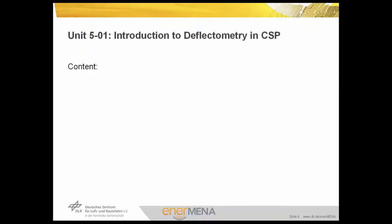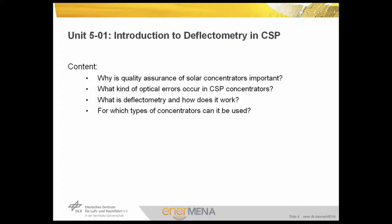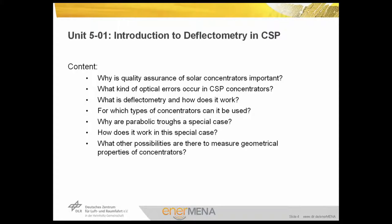In the first unit, Introduction to Deflectometry, we will talk about the following issues: why quality assurance of solar concentrators is important, what kind of optical errors occur in CSP concentrators, what is deflectometry and how does it work, and for which types of concentrators deflectometry can be used. We will also learn why a parabolic trough collector is a special case for deflectometry and how to handle its deflectometric measurement, as well as other possibilities to measure geometrical properties of concentrators.